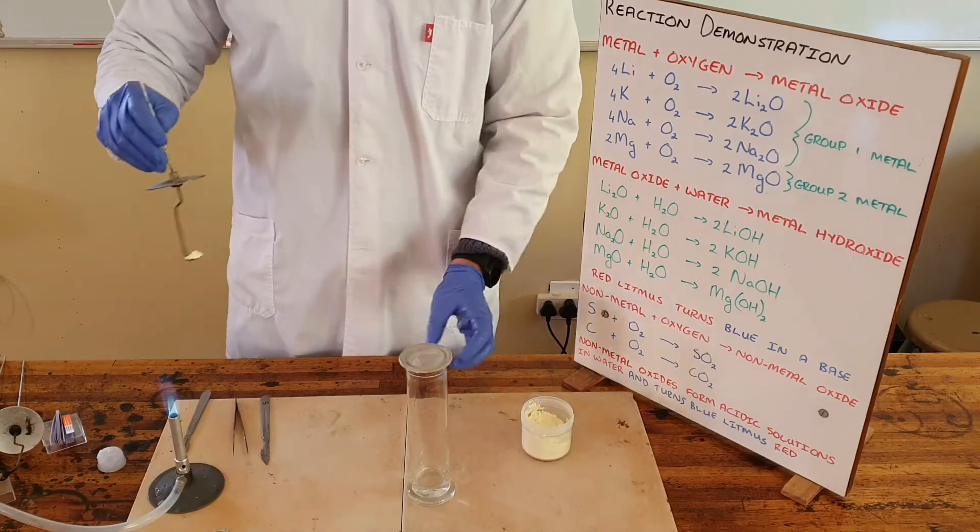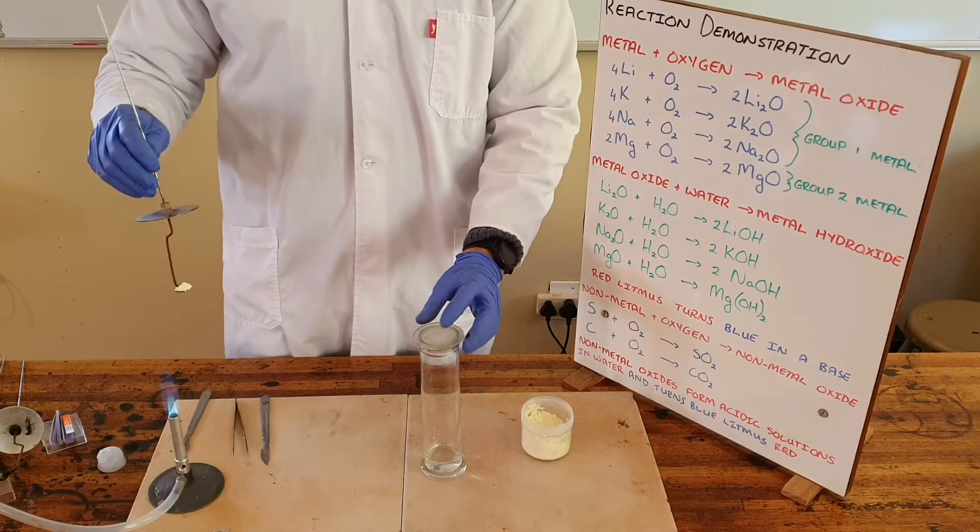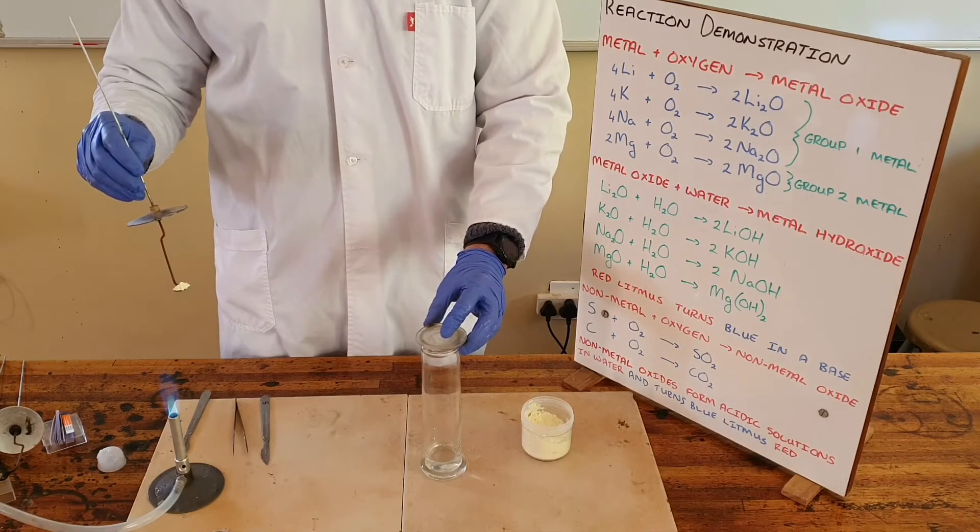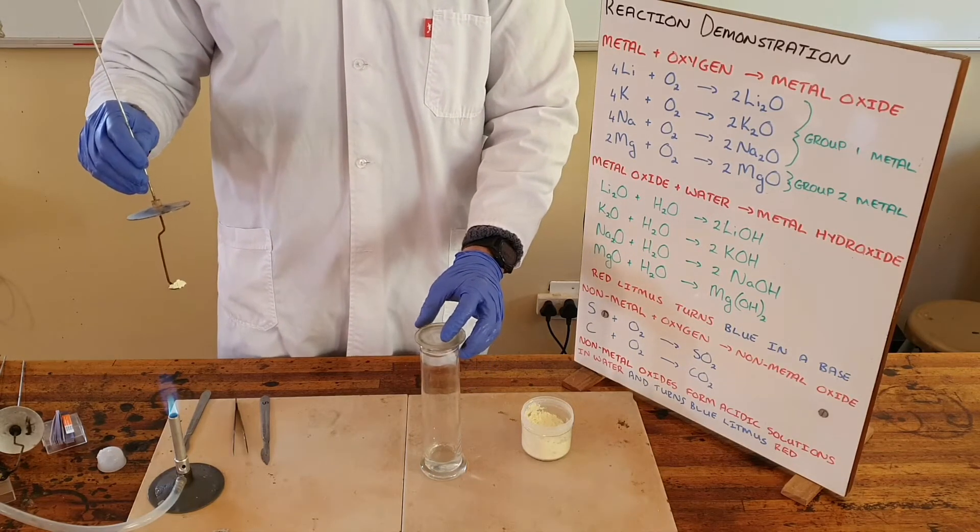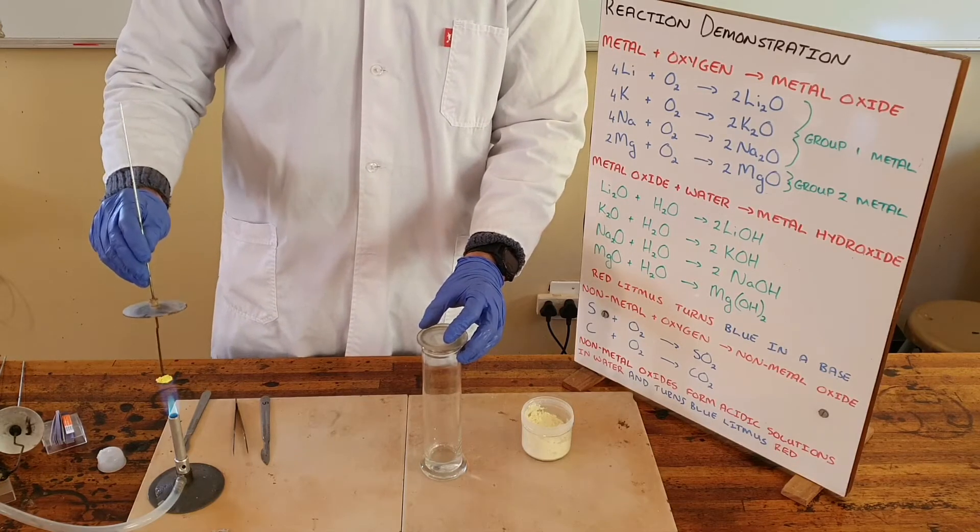I'm going to ignite the sulfur over the Bunsen burner and then place it in the gas jar which contains pure oxygen to observe the reaction between sulfur and oxygen.